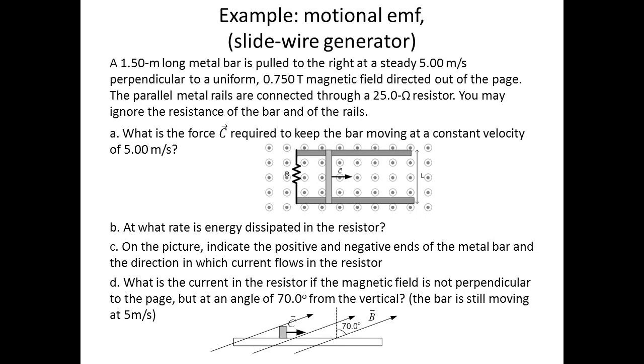Here's an example of motional EMF using a slide-wire generator. A 1.5 meter long metal bar is pulled to the right at a steady 5 meters per second, perpendicular to a uniform magnetic field of 0.75 Tesla directed out of the page.